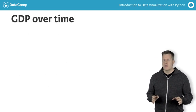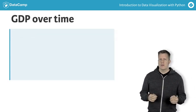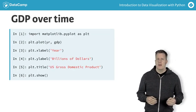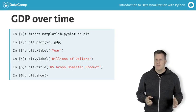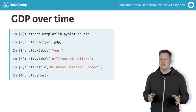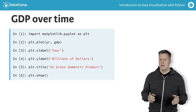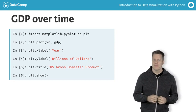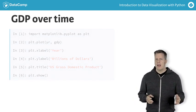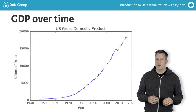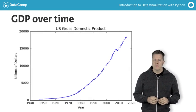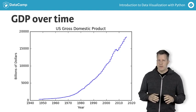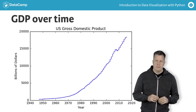Let's consider an example using the US gross domestic product from 1947 to 2016. The basic plot is simple to generate and label in four lines of code. When we issue the show command, this is the figure generated. Notice the vertical scale is chosen for us to fit all the data.